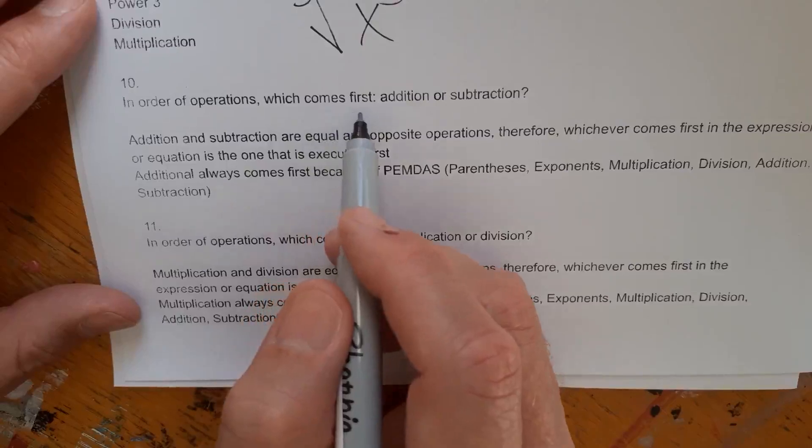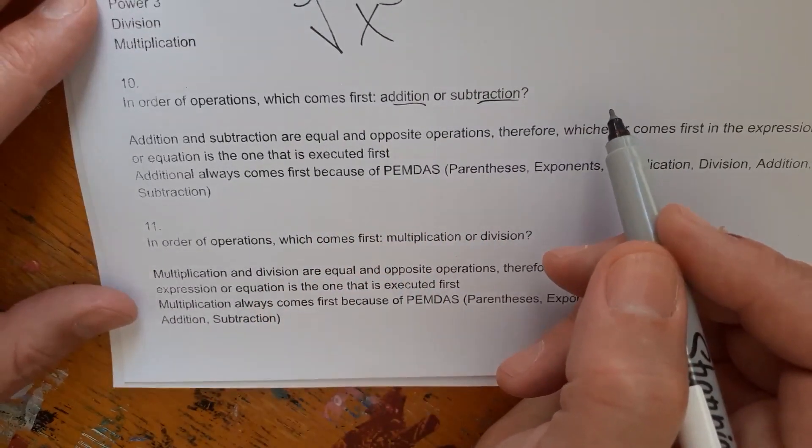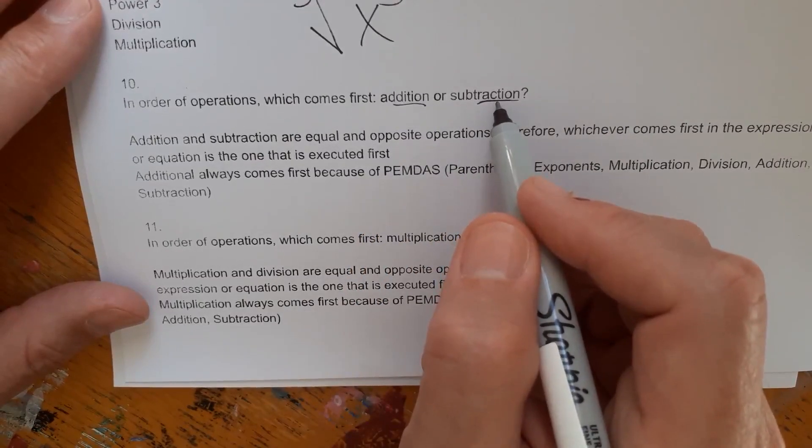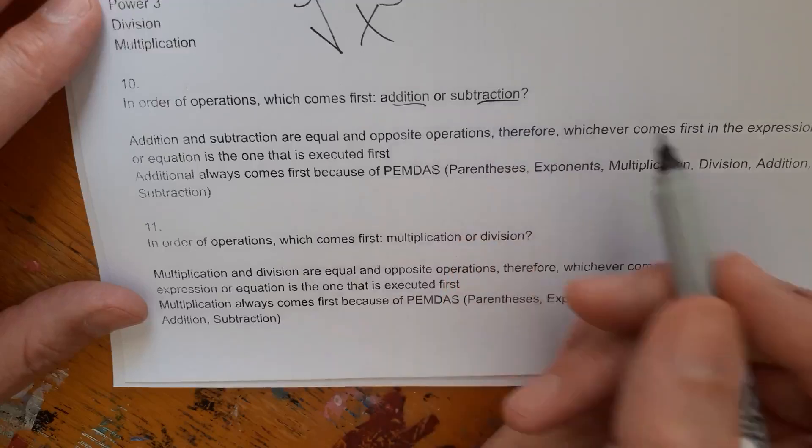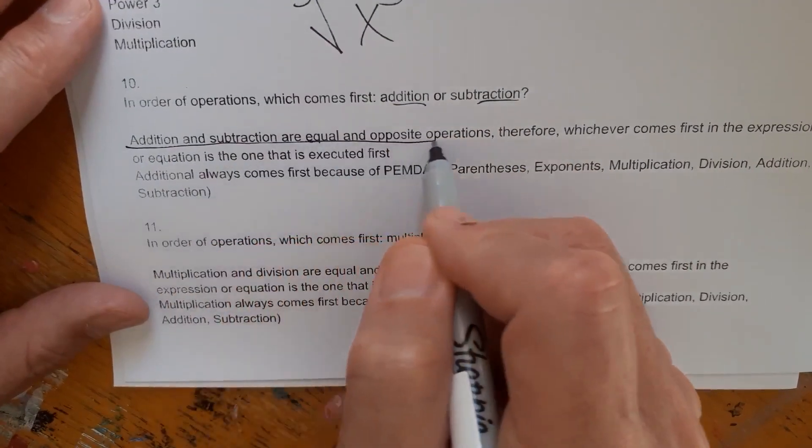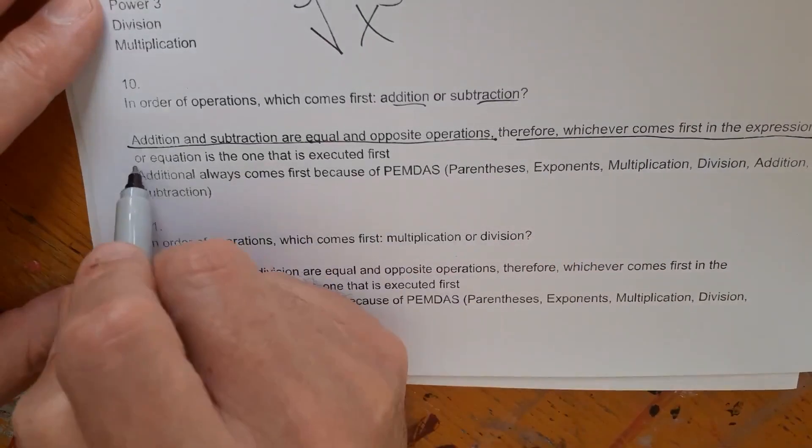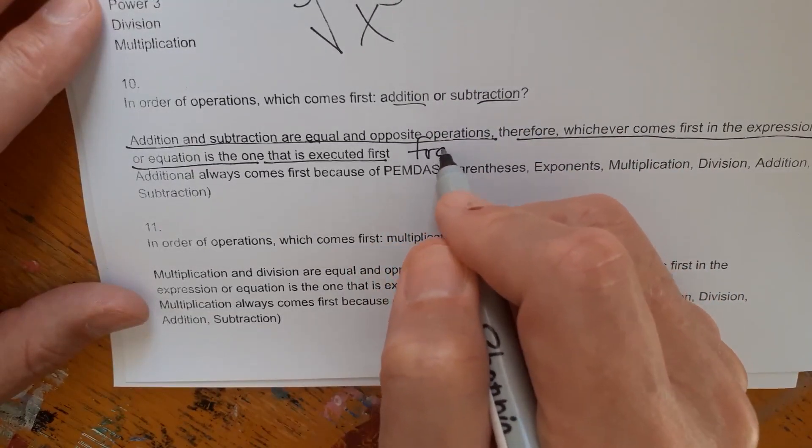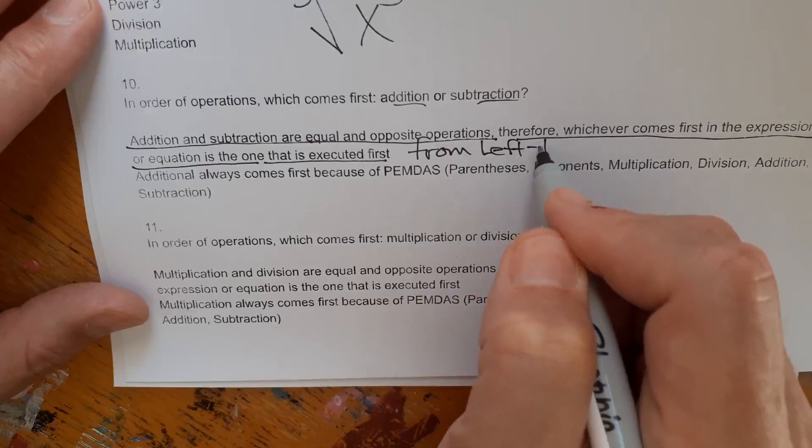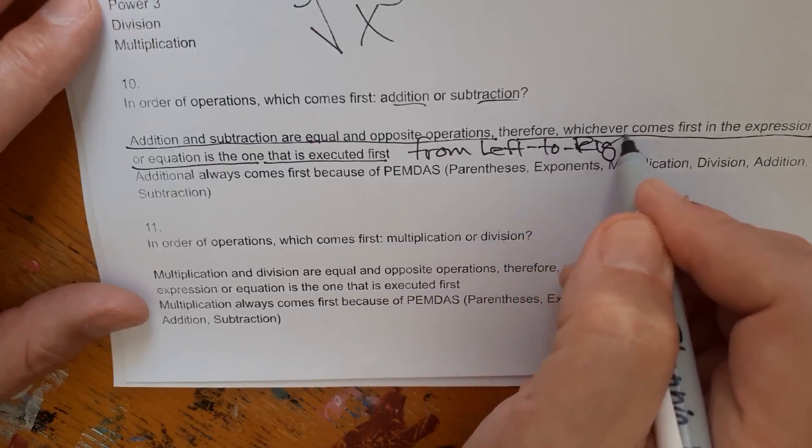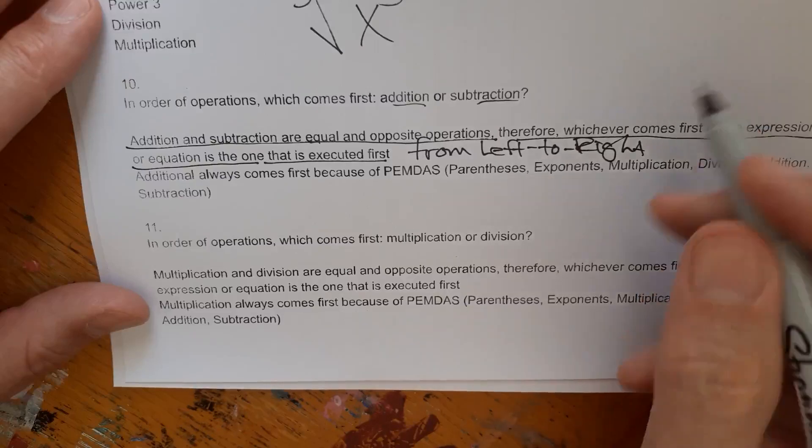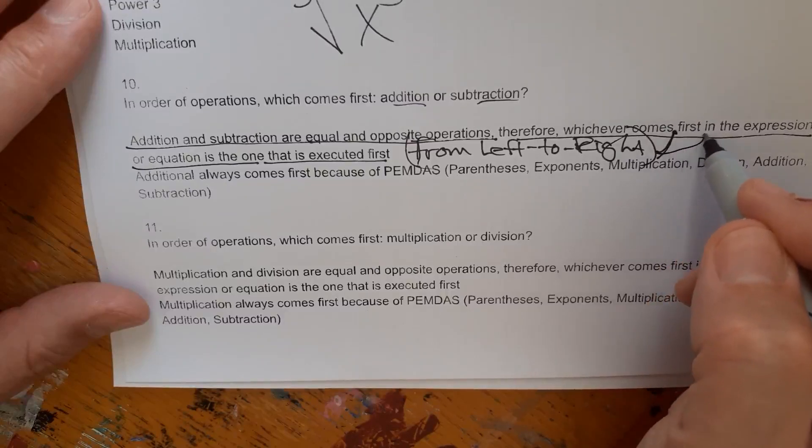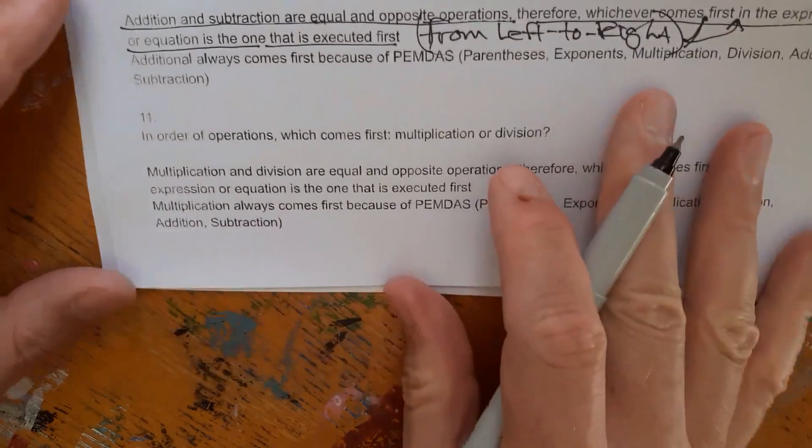In order of operations, which comes first? Addition or subtraction? So this is a trick question, you guys. In order of operations, addition and subtraction are equal and opposite operations. They come first, whichever is first, left to right. So addition and subtraction are equal and opposite operations. Therefore, whichever comes first in the expression or equation is the one that is executed first. And I kind of wish I had said comes first from left to right. Because that's the way your teacher is probably going to say it in class. So whichever comes first, I wish I had put this from left to right, right in, right here in a parenthesis. It would be nice.